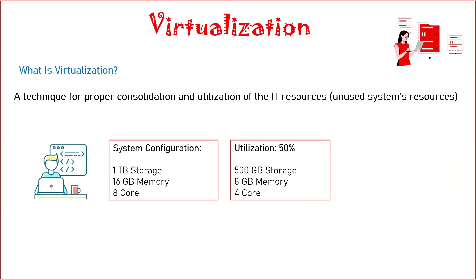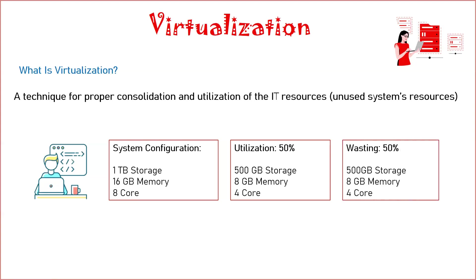If I talk about the total population across the world — the people using personal laptops, PCs, or devices — their utilization is not so high; it would not go beyond 50–70%. That means you are still wasting certain resources. If I take the example of one terabyte of storage, 16 GB of memory, and eight cores, and the utilization is 50%, that means you are wasting almost 50% of resources. This is practically true across the world.